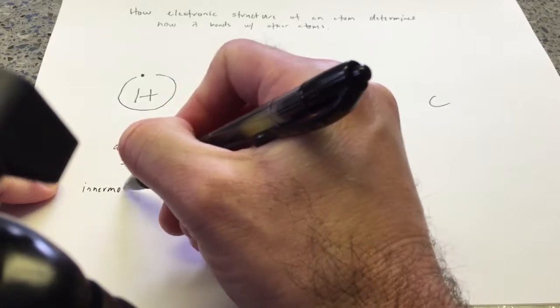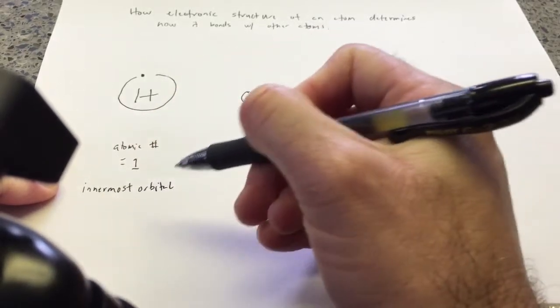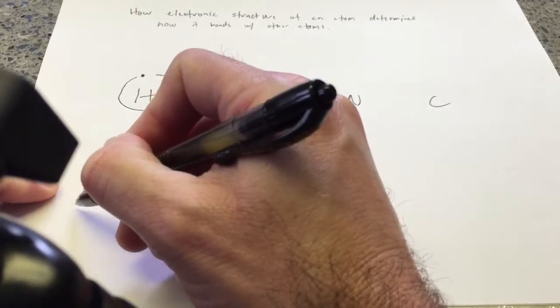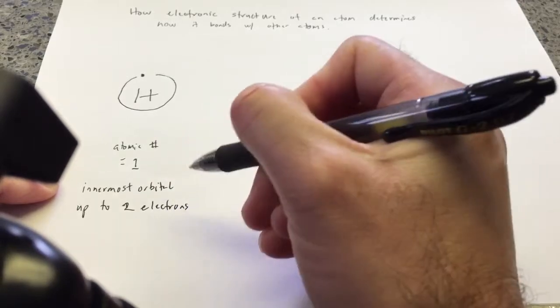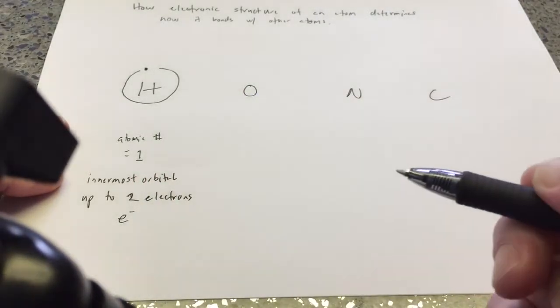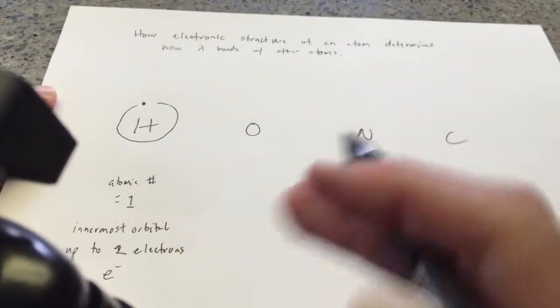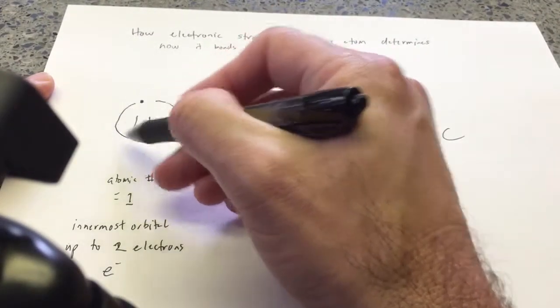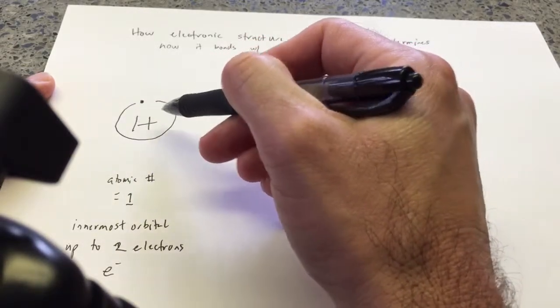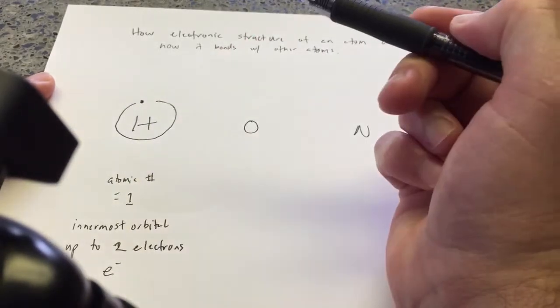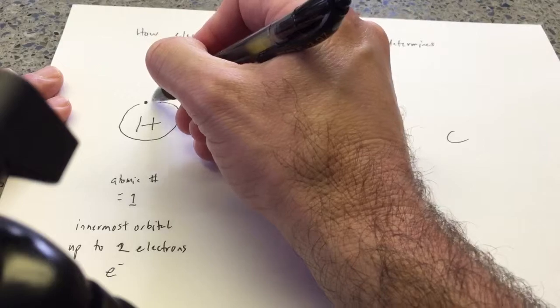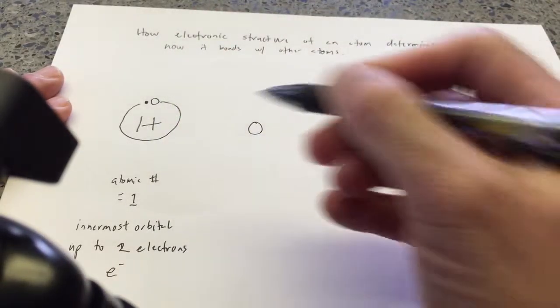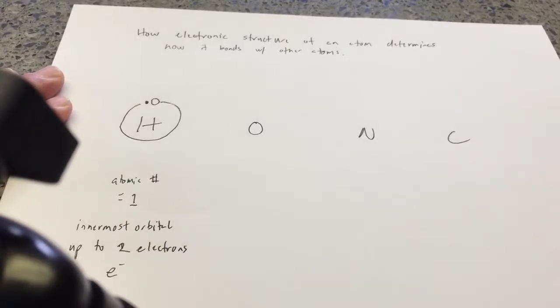The innermost orbital of any atom can take up to two electrons, which I abbreviate as e to the minus. All right? So that means what? That means that hydrogen has one electron in its innermost orbital, or in its only orbital, but that electron is unpaired. It's alone. So how many can it take? It can take up to two. So that means there's a little hole, right? And I'm going to draw like a little circle. I'm going to call this an electron hole where we can fit another electron. All right? So that's hydrogen.